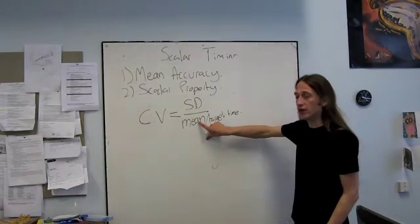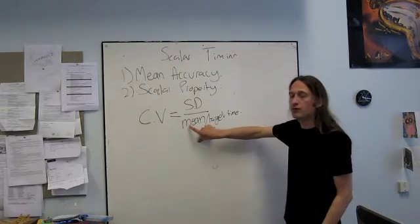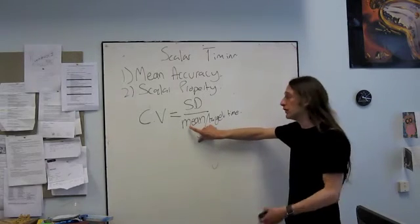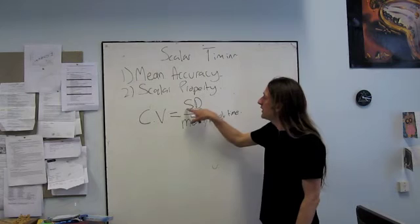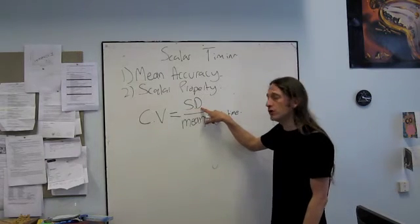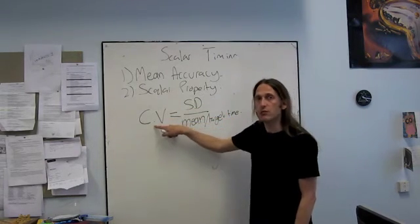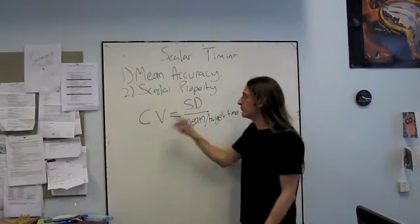So if I double the target time, so if I go from asking them to produce one second to asking them to produce two seconds, this will double, but this standard deviation should also double. So you'll always get a constant number, a constant coefficient of variation.